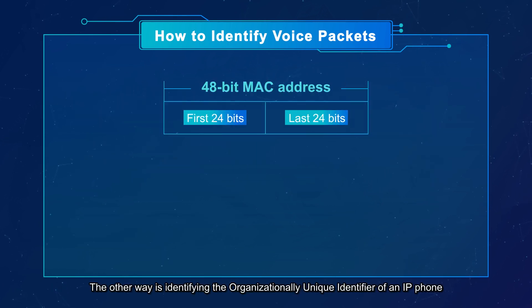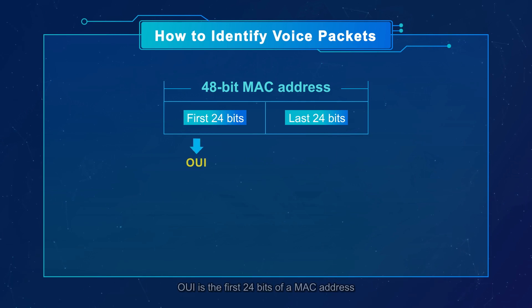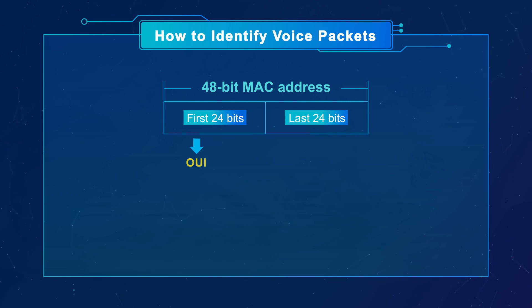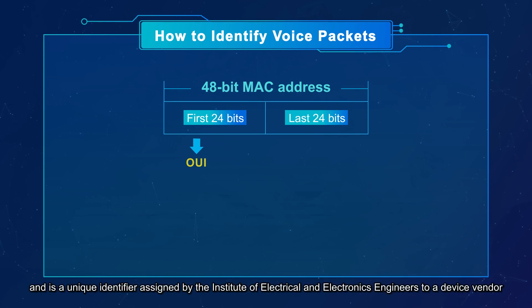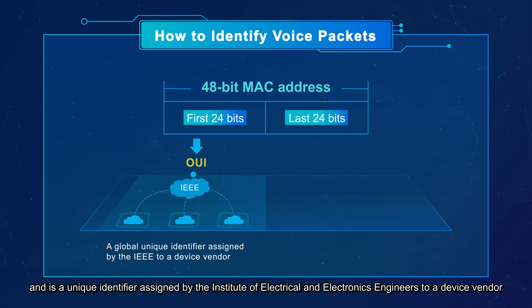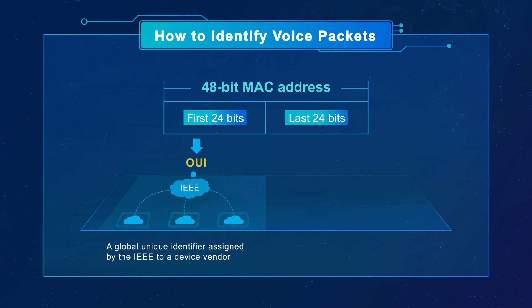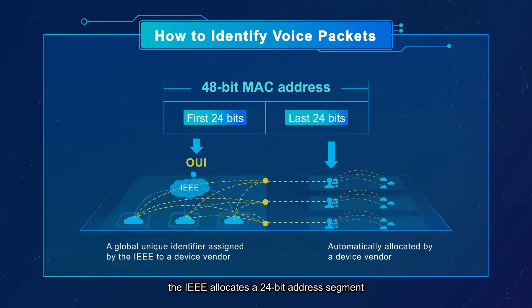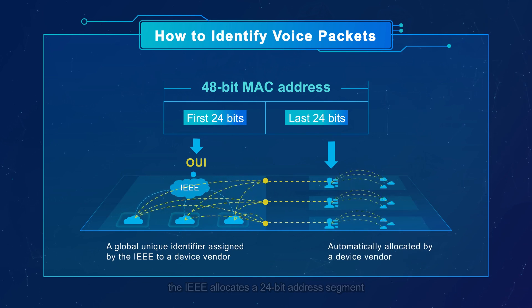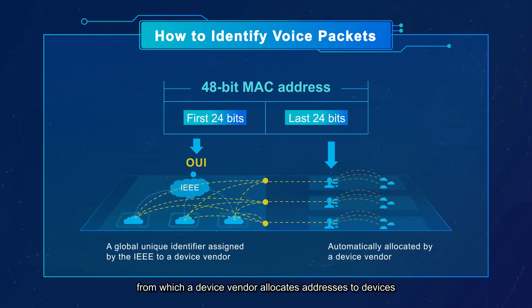The other way is identifying the Organizationally Unique Identifier (OUI) of an IP phone. OUI is the first 24 bits of a MAC address and is a unique identifier assigned by the Institute of Electrical and Electronics Engineers to a device vendor. Generally, the IEEE allocates a 24-bit address segment from which a device vendor allocates addresses to devices.